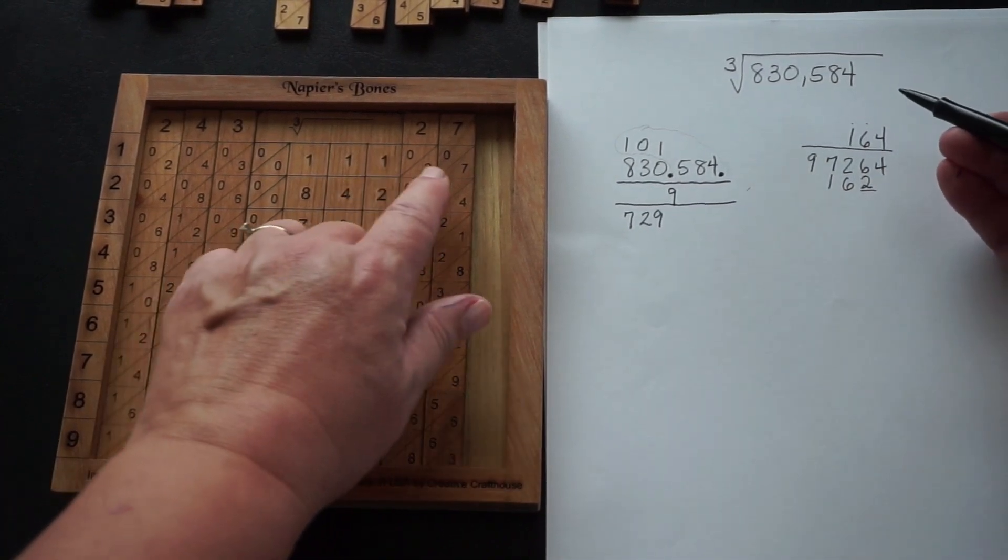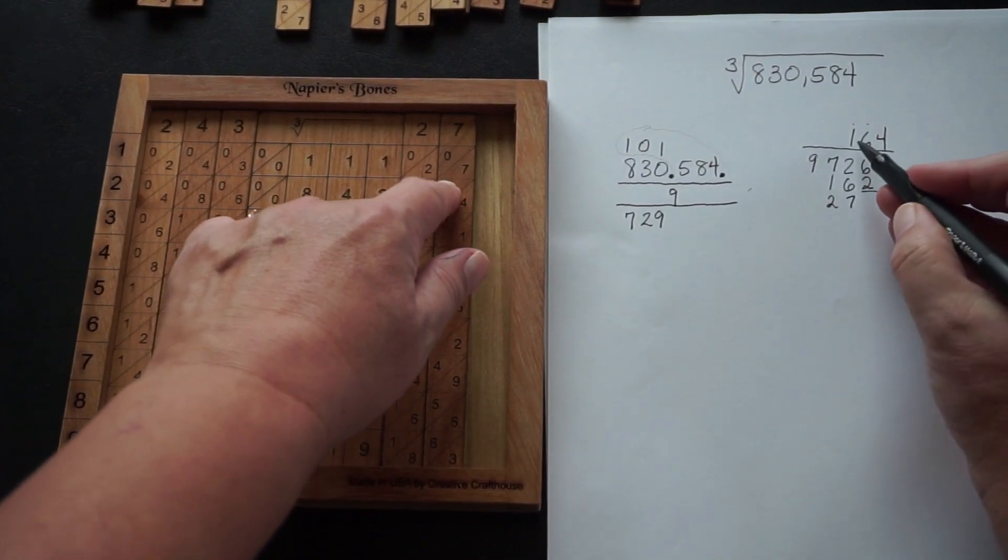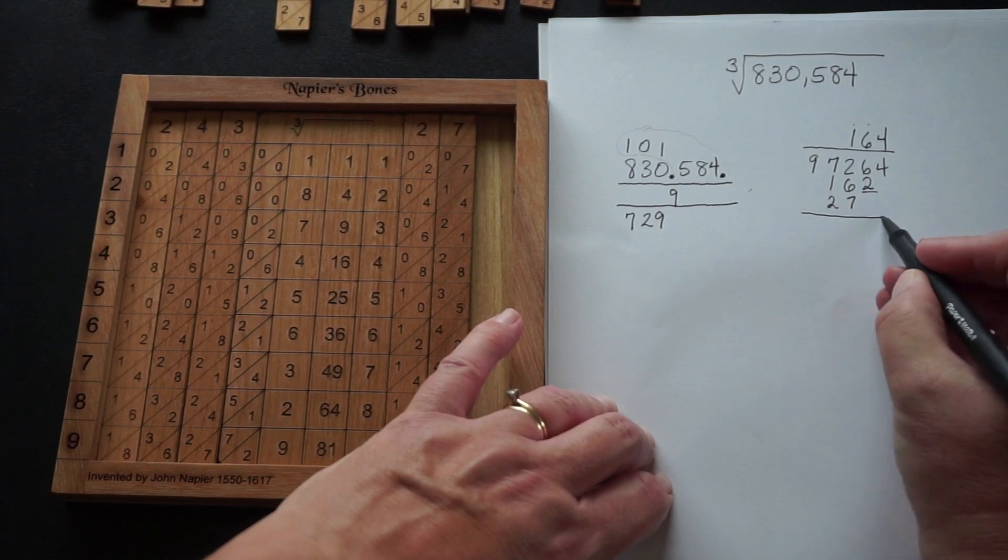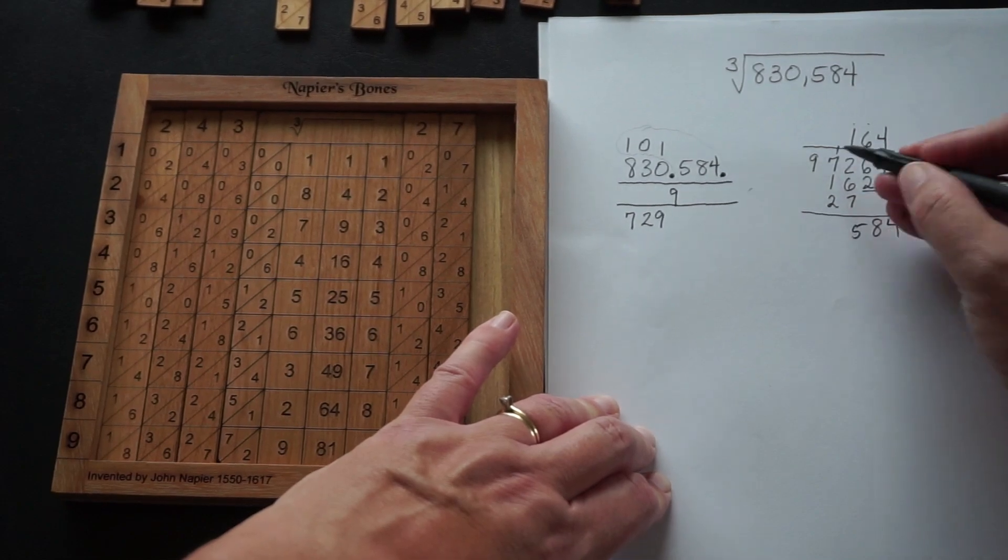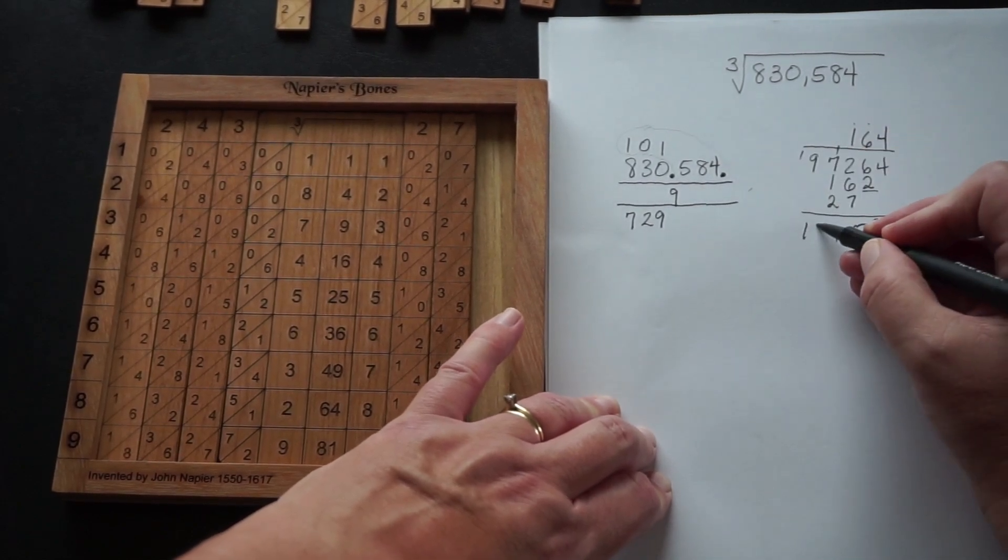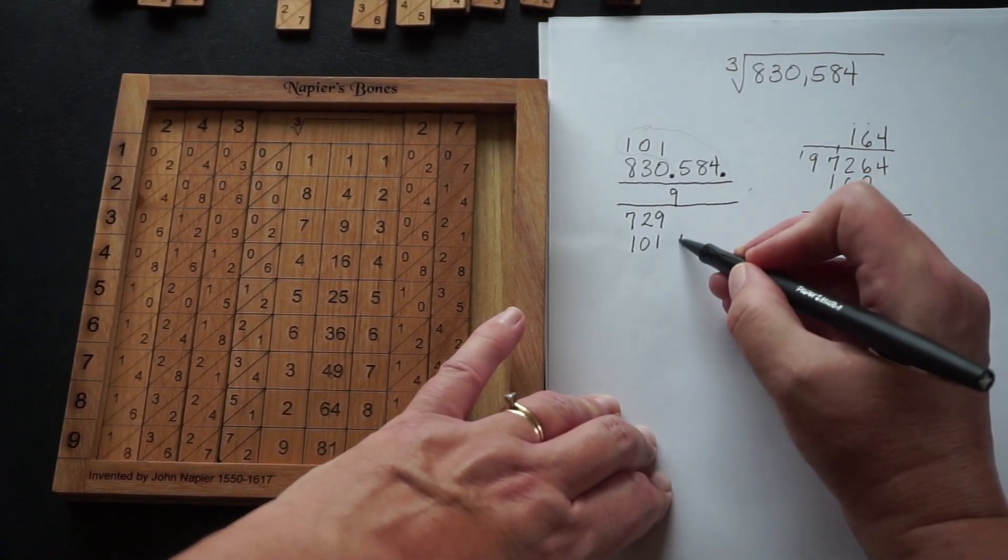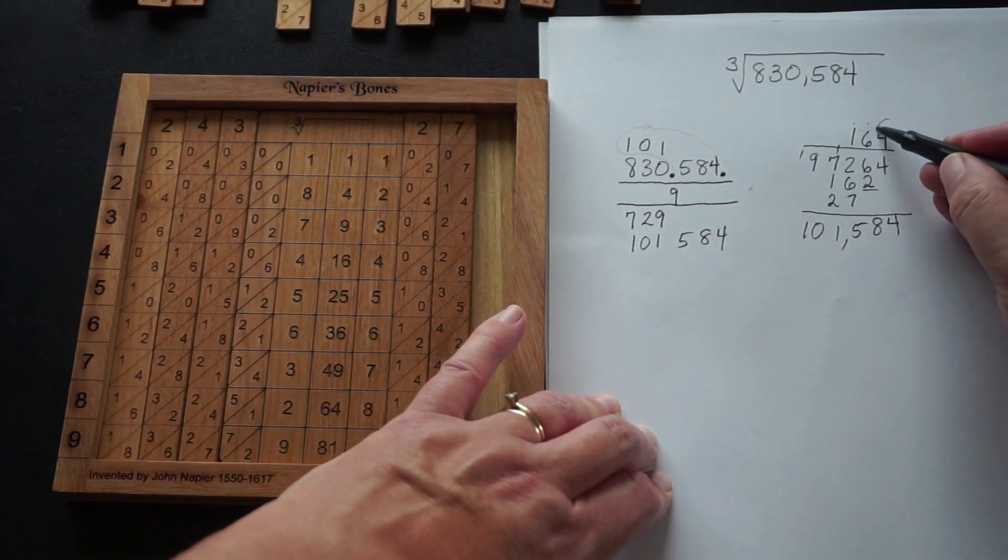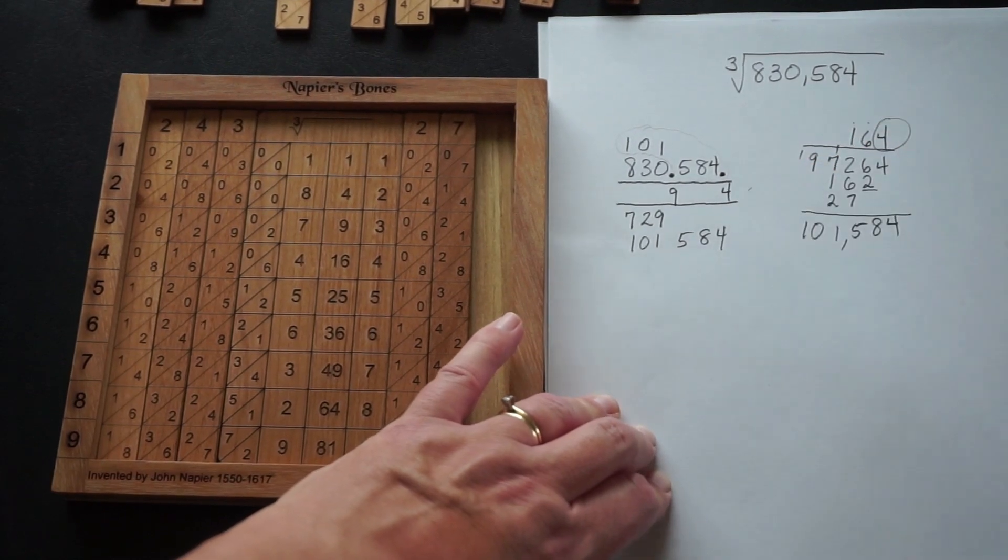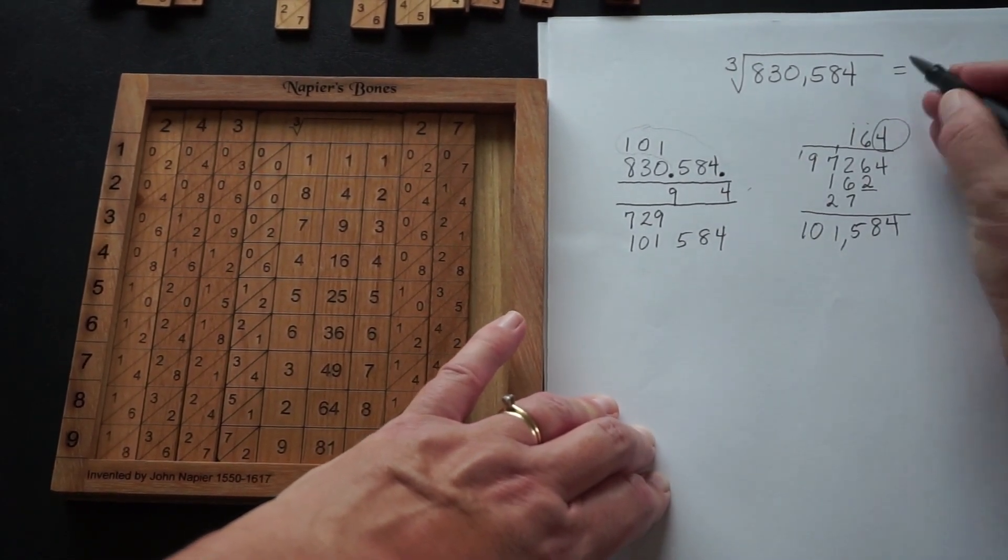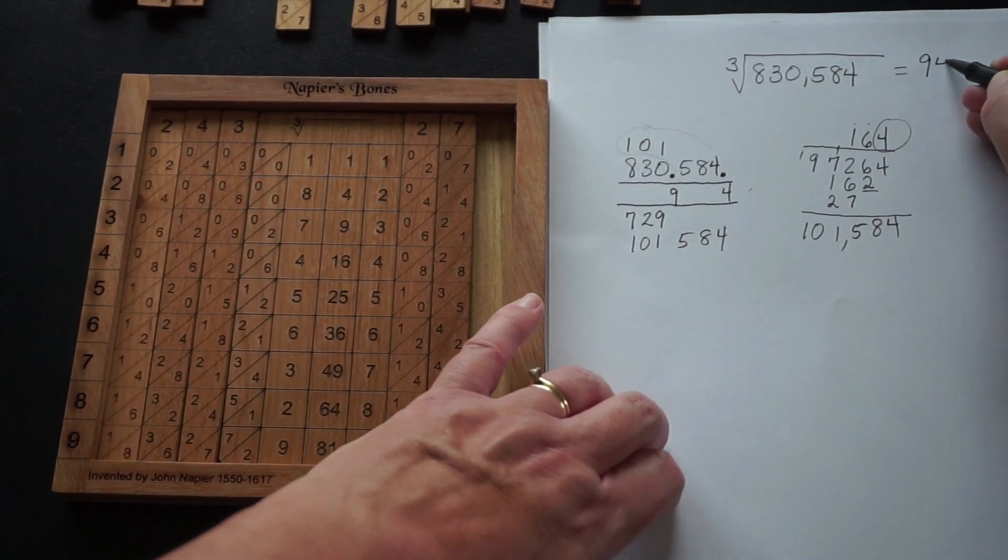Then I'm going to multiply by the 1. 1 times 27 is 27, and we want to get the ones place directly below what we were multiplying by, which is the 1. As we add straight down, we see that the result is 101,584, which is exactly what we were looking for. So the row that this came from is our second quatumus, and the cube root of 830,584 is 94.